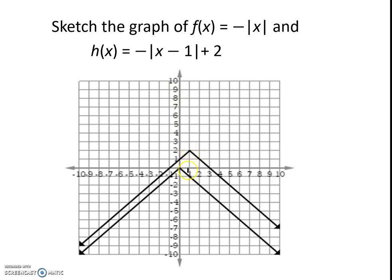And this puts it up 2 with a vertical move up 2, and there is our absolute value of a negative x minus 1 absolute value plus 2.